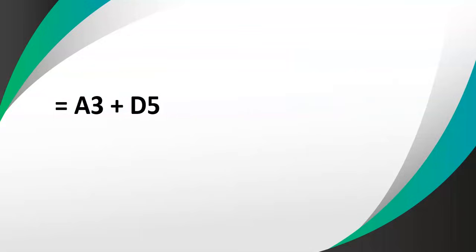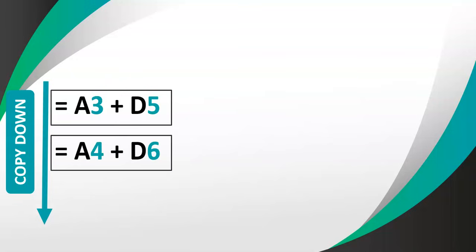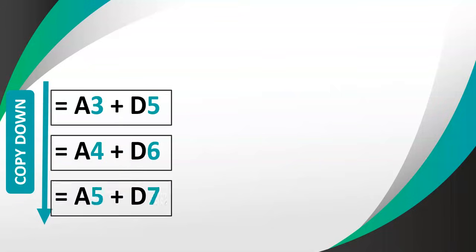Now what happens when you copy formulas down? The numbers will change. If I copy the formula down one block, the 3 will change to a 4 and the 5 will change to a 6. If I copy it down two blocks, the 3 changes to a 5 and the 5 changes to a 7. The same applies copying up — the numbers get smaller by however many blocks you move up.